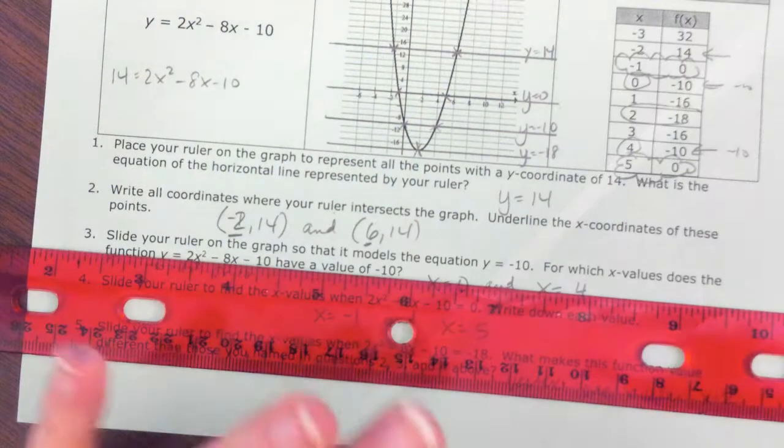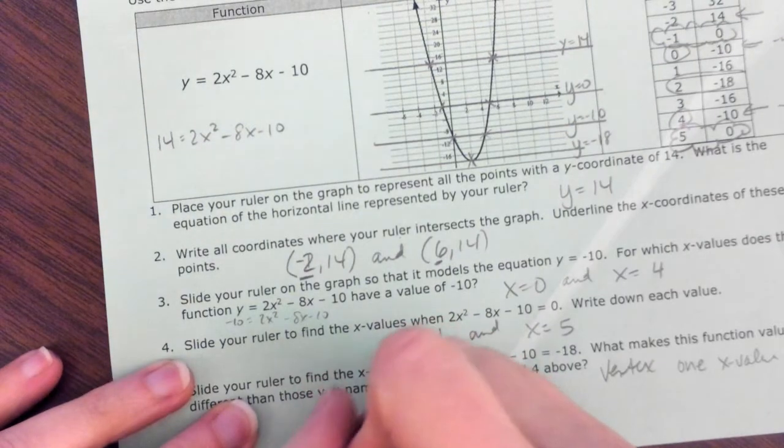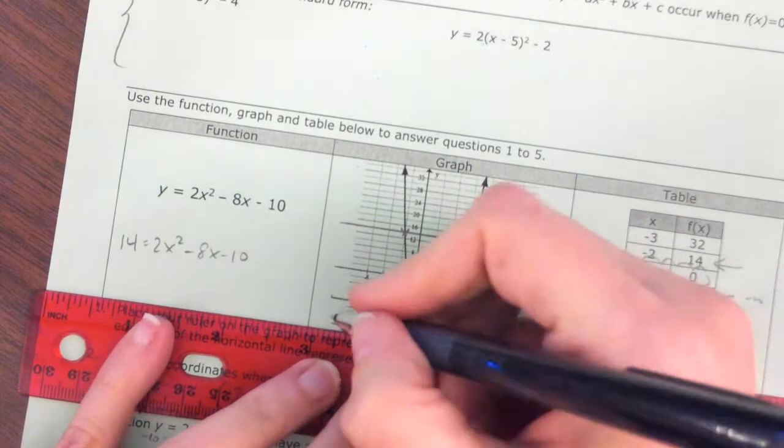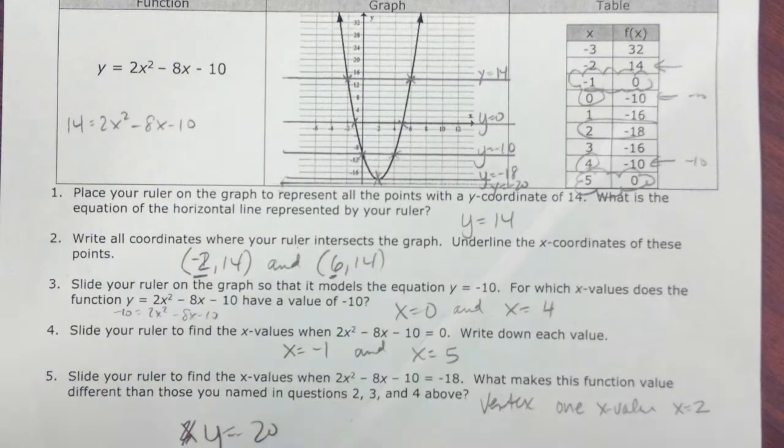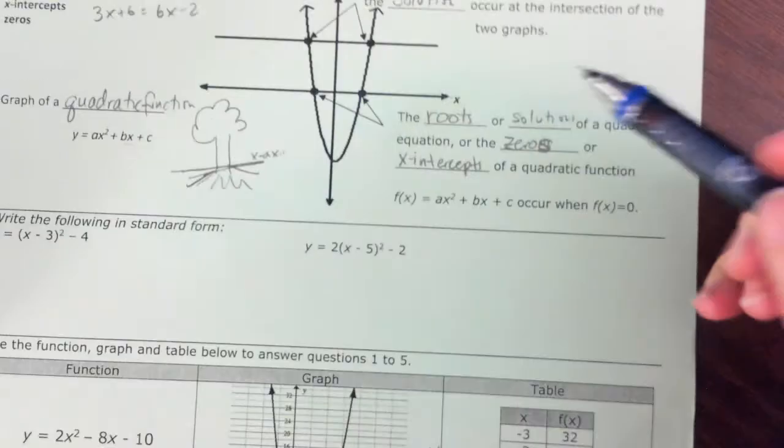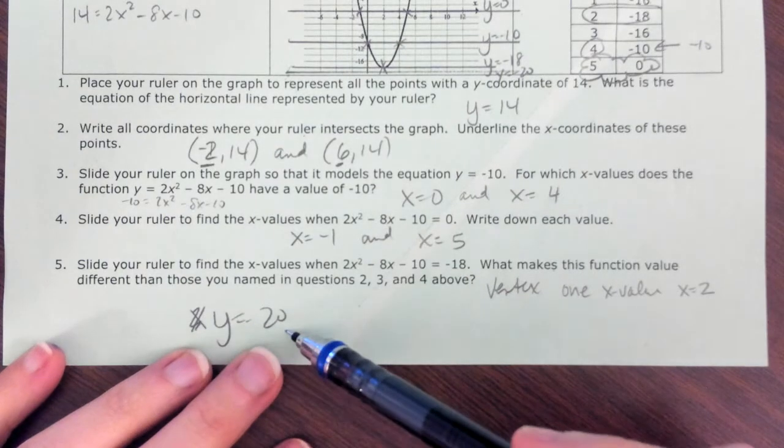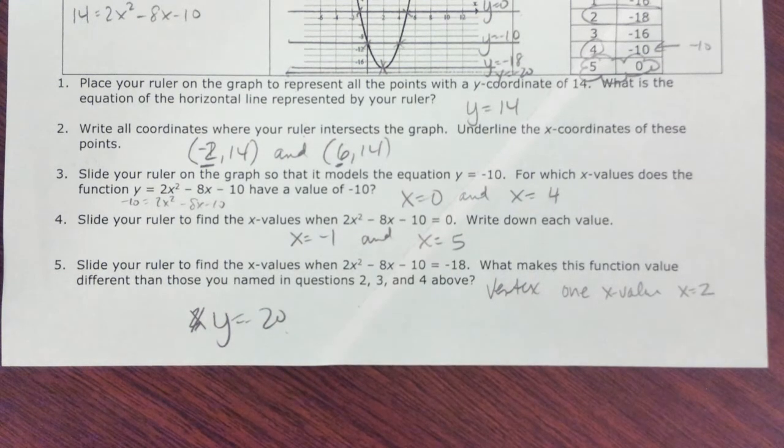Now, just for grins, what if I asked you to put a line at y equals negative 20? And, I put this line down here at y equals negative 20. What's happening down there? How many solutions do I have down there? I've got none, because the parabola never reaches that far. So, I have no x values. I have no solutions. I have no solutions to y equals 20, because there are no values where my parabola crosses that graph.